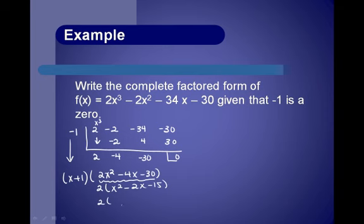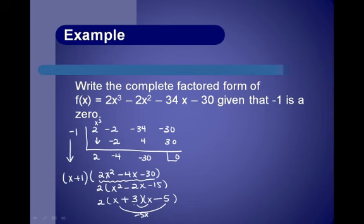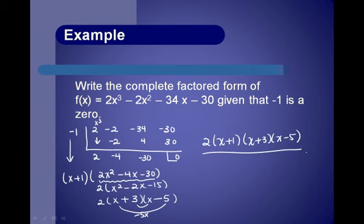Now we factor that further: we get x and x. The last two have to multiply to give negative 15 but add to give negative 2. We use 3 and 5: that gives 5x and 3x. To get a middle term of negative 2x, we need the negative on the 5x. So the complete factored form is x plus 1 times 2 times x plus 3 times x minus 5.